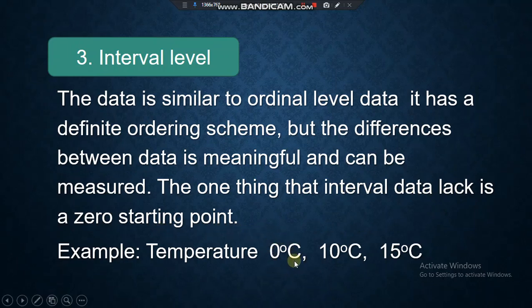Now, how about this? Zero degrees Celsius in temperature has real temperature. It is not an absolute zero. In fact, if you convert that into Fahrenheit, it is 32 degrees Fahrenheit. Temperature still exists at zero degrees Celsius. It is not absolute zero. So, that is the interval level.